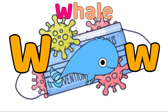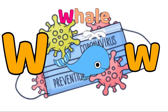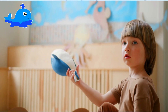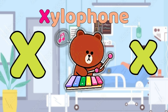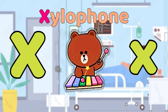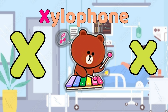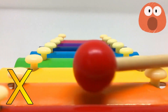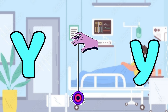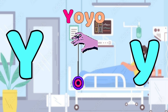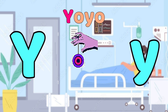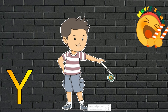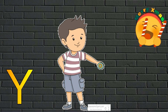W is for Whale. W, W, Whale. W, W, Whale. W, Whale. X is for Xylophone. X, Xylophone. Y is for Yo-Yo. Y, Y, Yo-Yo. Y, Y, Yo-Yo. Y, Yo-Yo.